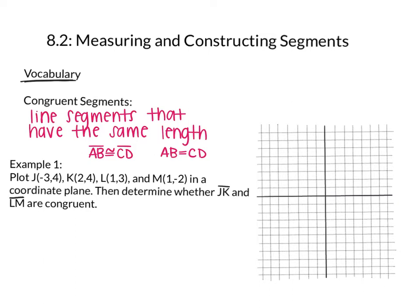So let's take a look at the first example here. Example one says plot J, K, L, and M in a coordinate plane, then determine whether segment JK and segment LM are congruent. So let's plot those points on a little graph here. If you don't have a graph, go ahead and sketch one and then plot those points. So I'm going to start by plotting point J at negative 3, 4, and I'm going to label it J. I'll plot K at 2, 4, and I'll label that K. I'll plot L at 1, 3, and I'll plot M at 1, negative 2.